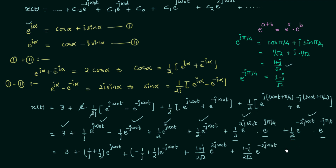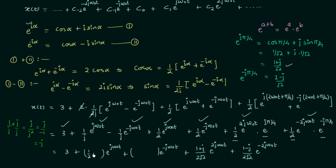Comparing with the standard expansion we can identify c minus 2, c minus 1, c0, c1, and c2. One more simplification: for 1 by j, multiply numerator and denominator by j to get j divided by j squared, which equals j divided by minus 1, which equals minus j. So 1 by j becomes minus j and minus 1 by j becomes plus j. The coefficient of e raised to power j omega0t becomes 1 by 2 minus j, and the coefficient of e raised to power minus j omega0t becomes 1 by 2 plus j.